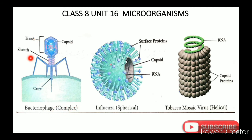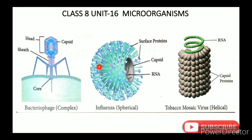The structure of a virus includes a head, capsid, sheath, and core. It contains RNA, surface proteins. A spherical-shaped virus example is the influenza virus. The tobacco mosaic virus has a helical shape containing RNA and capsid proteins. In the TNBC exam and competitive exams, you may be asked to select virus names from options such as cyanobacteria, bacteria, influenza, and tobacco mosaic virus.